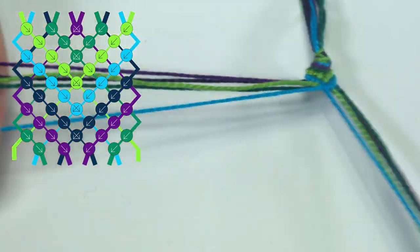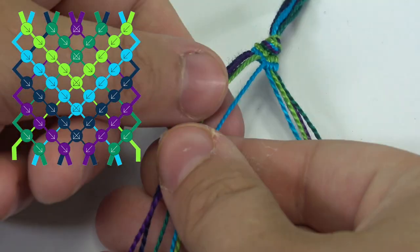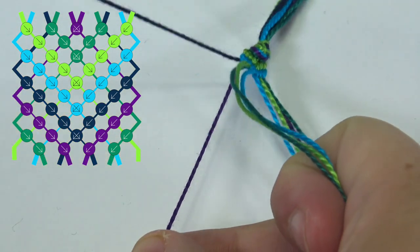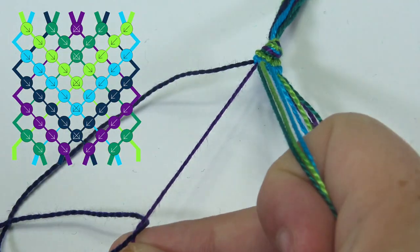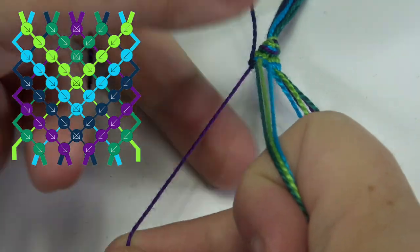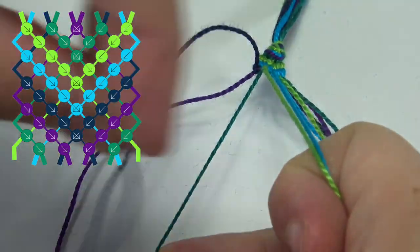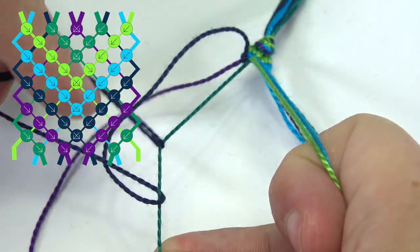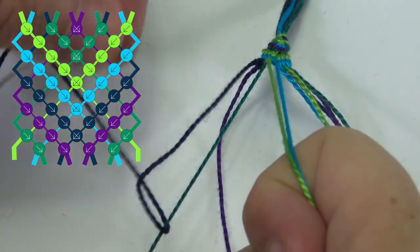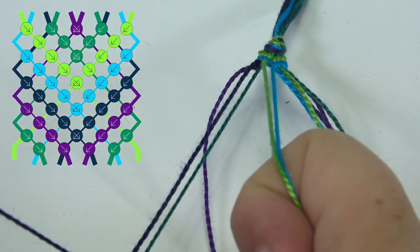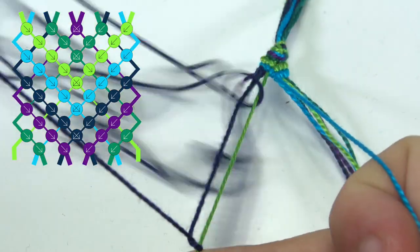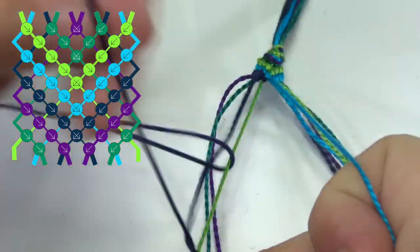And as I flatten it out, you can see the chevron design starting. I'm going to branch these out again, only work on my left hand side starting from the left going to the middle.